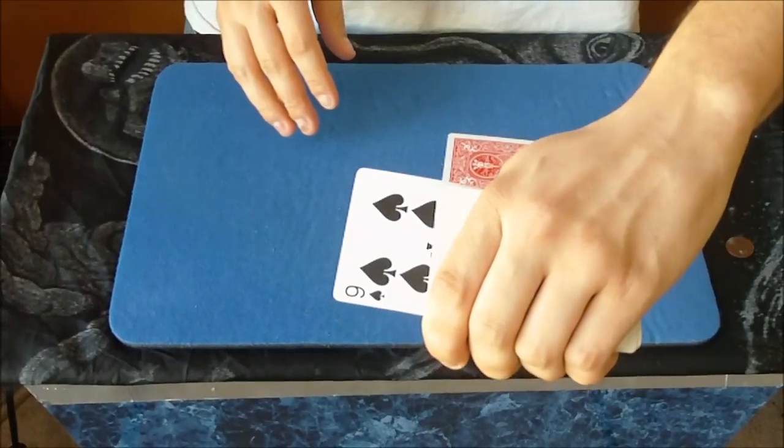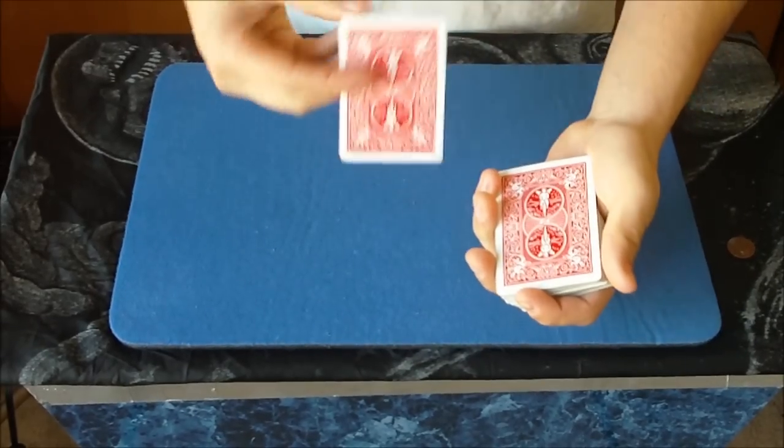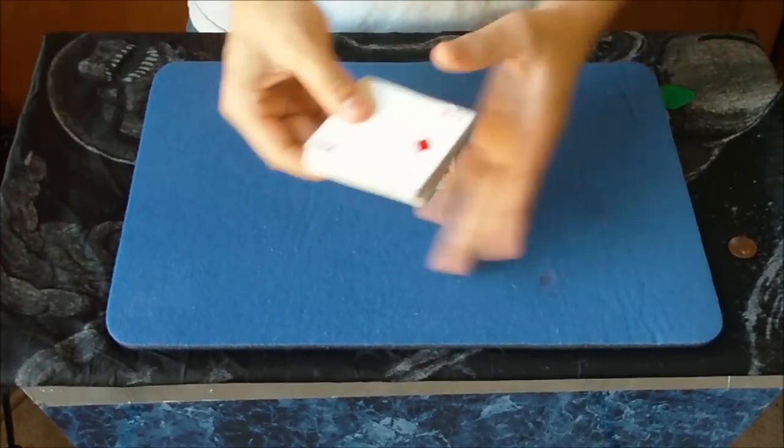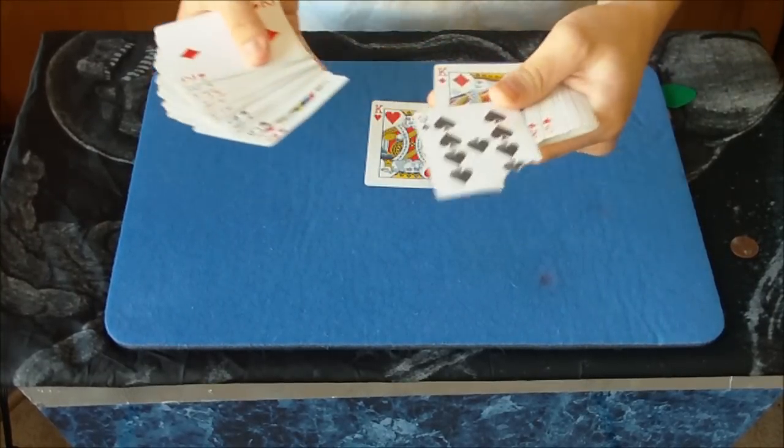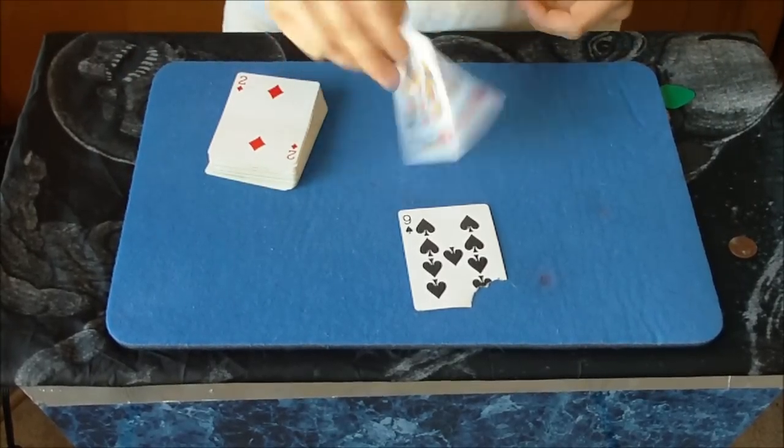So watch what happens. You take the deck, you take the King of Hearts right here, you wave it over just like that. And if you go through the deck, you can see that there is a bite taken out of the nine of spades. Wonder where it could have gone?